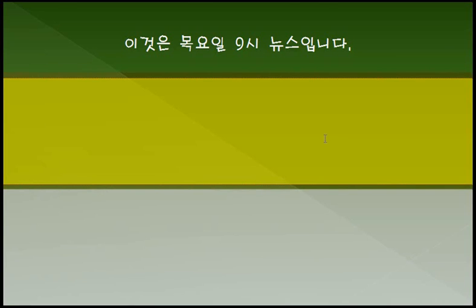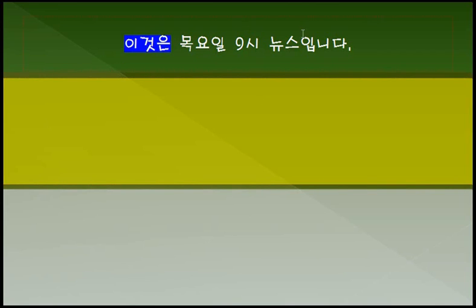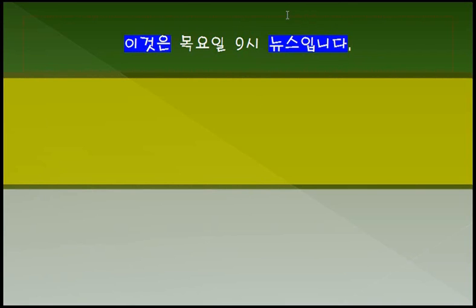함께 보겠습니다. 첫 번째 문장입니다. 이것은 목요일 9시 뉴스입니다. 이것은 뉴스입니다. 이것은 뭐뭐입니다. 무슨 동사? 비동사가 되겠죠.